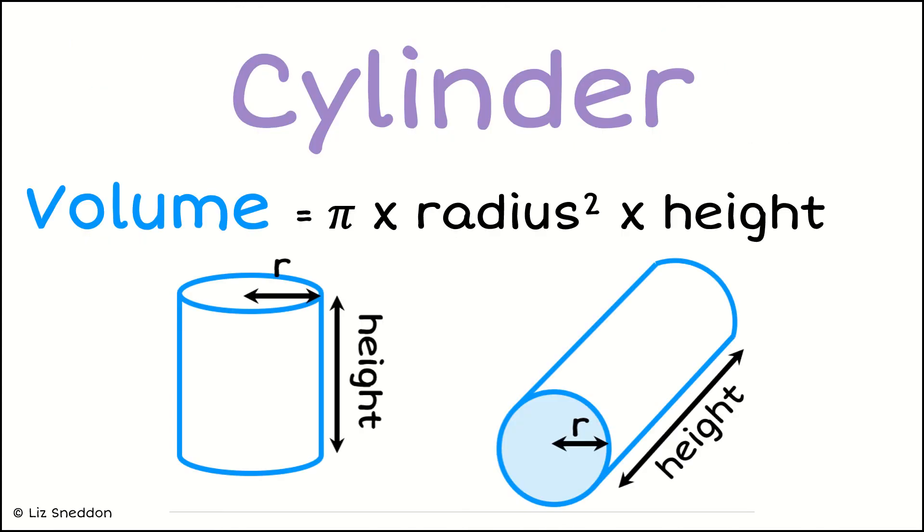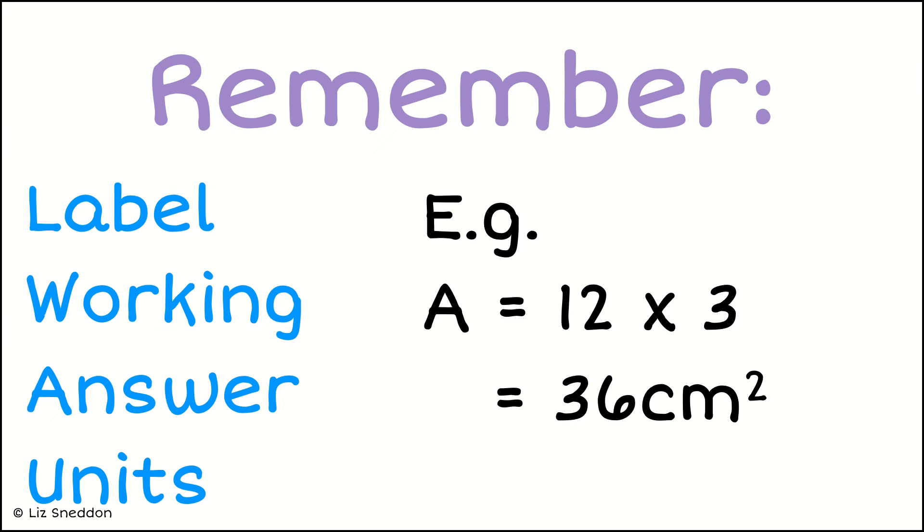There's a couple of diagrams to show you: pi times the radius squared, and then multiply that by its height, and that gets you the volume. Remember, we always want to see label, working, answer, and units.